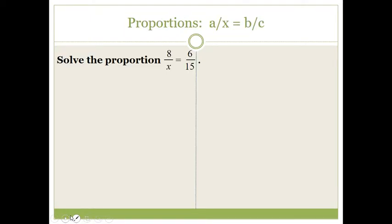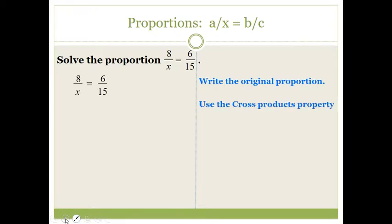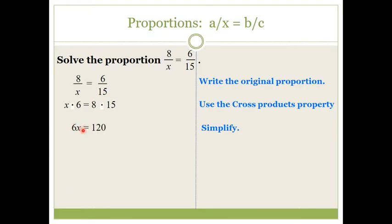Now let's solve a proportion involving the variable x. We want to solve eight over x equals six over fifteen. Using the cross product property, x times six equals eight times fifteen, giving us six x equals one hundred twenty. To isolate x, we divide each side by six, so x is equal to twenty, because one hundred twenty divided by six is twenty.